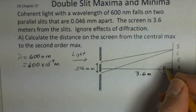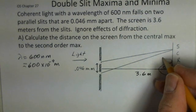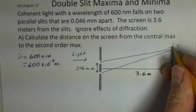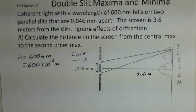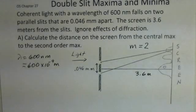We want to have the second order max. So it turns out this is the 0th order, the central max, and then first order, and then maybe second order like this. Second order tells us what m number to use in our calculation. The m will be 2 for second order.